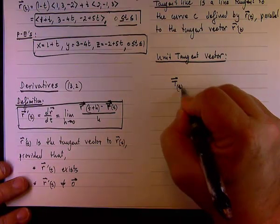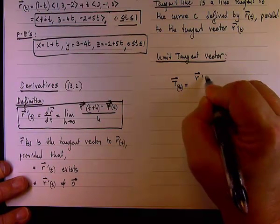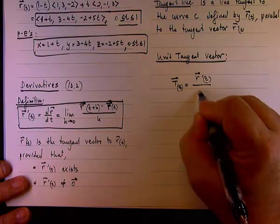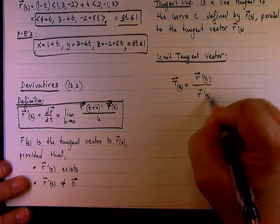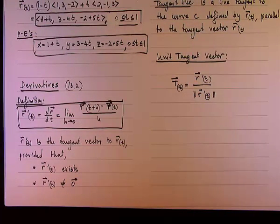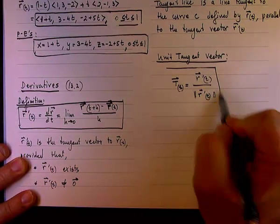And it will be the vector r' divided by its magnitude. Notice that I'm using the double bar to show the difference between magnitude and absolute value. Somebody asked me in the morning.